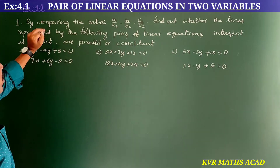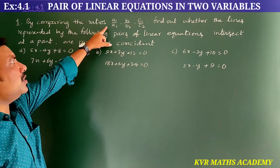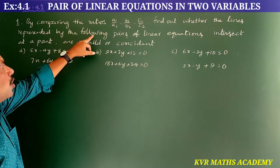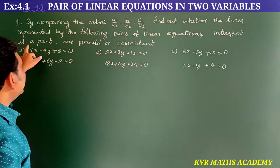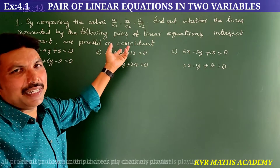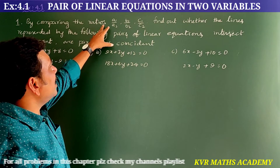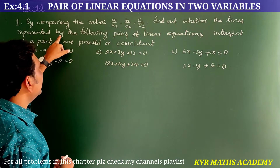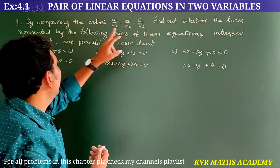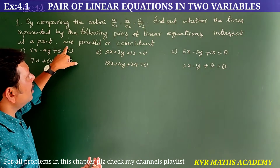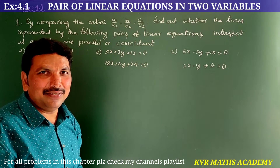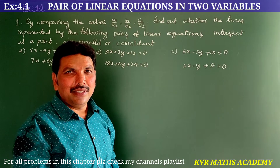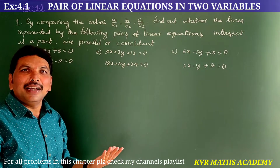This is the first question in Exercise 4.1. By comparing the ratios A1 by A2, B1 by B2, and C1 by C2, find out whether the lines represented by the following pairs of linear equations intersect at a point, are parallel, or are coincident. So here three situations are given. Let us find them one by one — whether those are parallel lines, coincident lines, or intersecting lines.